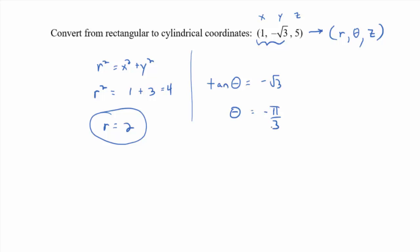If you wanted to go positive, what could you do? I don't remember how I wrote it. So you could add 2 pi, right? So what would that give you? Or 5 pi over 3?